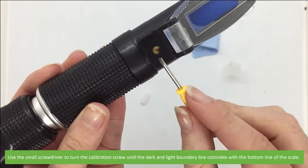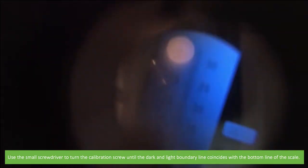Use a small screwdriver to turn the calibration screw until the dark and light boundary line coincides with the bottom line of the scale.